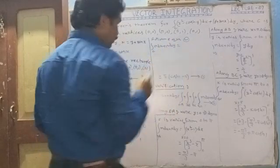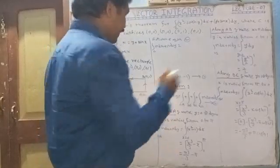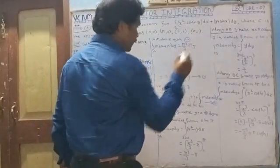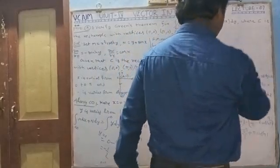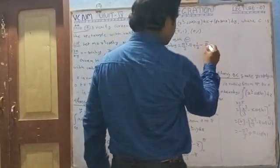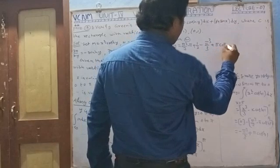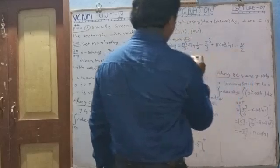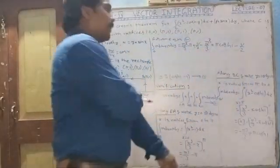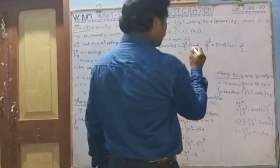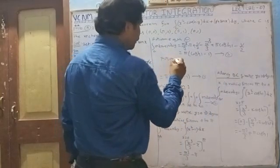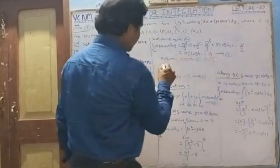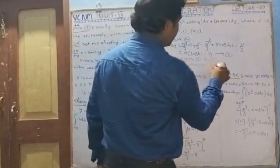From equation 2: integral over C of M dx plus N dy equals along OA: π cubed by 3 minus π, plus along AB: 1 by 2, plus along BC: minus π cubed by 3 plus π·cosh(1), plus along CO: minus 1 by 2. The plus 1 by 2 and minus 1 by 2 cancel; minus π cubed by 3 and plus π cubed by 3 cancel. Remaining terms: π·cosh(1) minus π, which equals π(cosh(1) minus 1). This is equation 3.